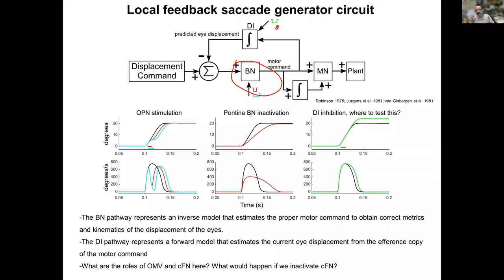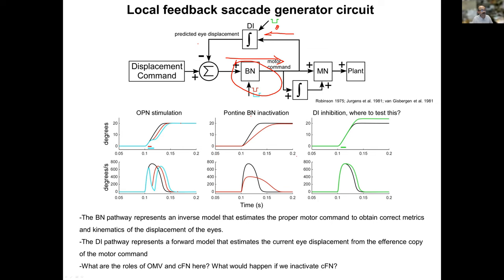This circuit represents the internal model of the cerebellum for the saccadic system. The burst neuron pathway represents an inverse model that estimates the outcome displacement of the eyes from the displacement command, while the feedback represents a forward model that takes a copy of the motor command and predicts displacement. The question is: what is the role of the OMV and CFN here? What would happen if you inactivate the CFN?